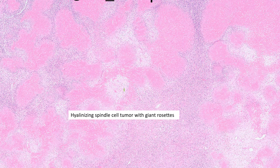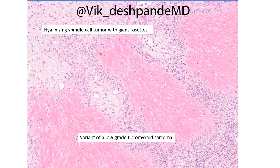While most low-grade fibromyxoid sarcomas look very similar, there's one variant that looks quite different: the so-called hyalinizing spindle cell tumor with giant rosettes — and here are these rosettes. Aren't they pretty? They're the prettiest thing you'll ever see. As far as I know, there's no other tumor that quite looks like this. Although it looks somewhat different, these are genetically identical to low-grade fibromyxoid sarcomas. In a sense, this is just a variant of low-grade fibromyxoid sarcoma.